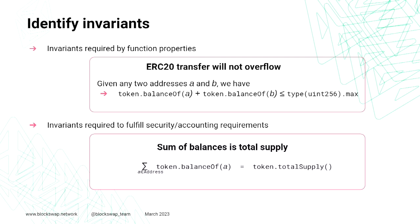To identify invariants, there are two kinds that are important. One kind is induced from the function properties we want to hold. For example, the transfer function from ERC20 requires that it returns true if there is sufficient balance from the sender — so given any two addresses A and B, adding their balances must not overflow. Another kind is a security or accounting invariant: we want the sum of all balances to equal the total token supply, to ensure nobody can steal tokens and that we haven't lost any tokens.